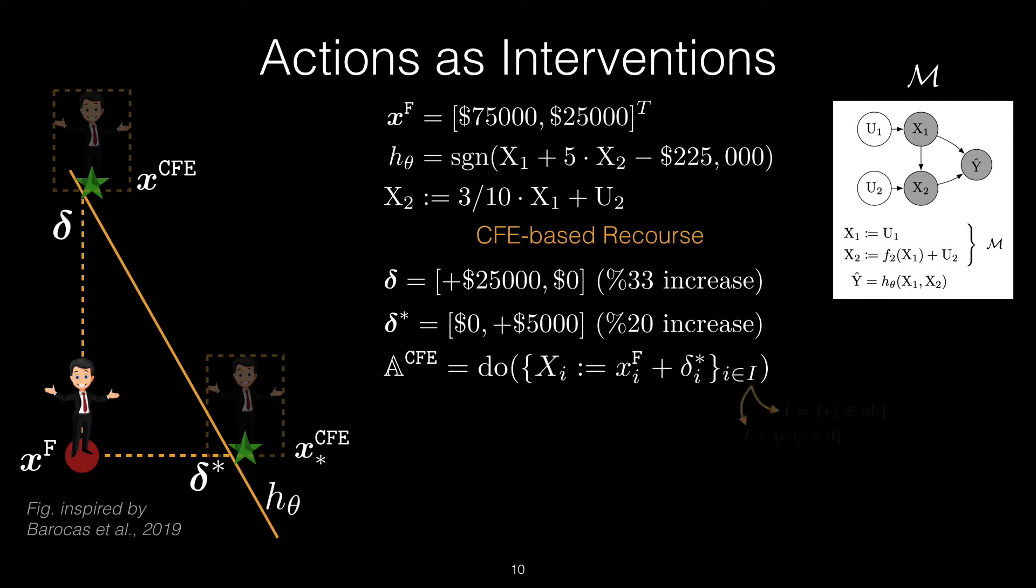A counterfactual explanation-based recourse action could then be carried out via a structural intervention on the set of variables in I, where the set I may be any arbitrary subset of the observed variables, as long as the intervention contains the variable indices for which δ*_i is not zero. This means that if δ* suggests a non-zero change to variable x_i, the individual may perform an intervention on x_i, setting its value to the factual value plus δ*_i.